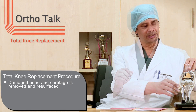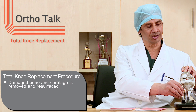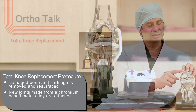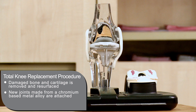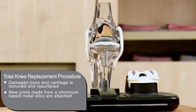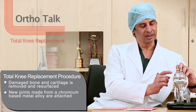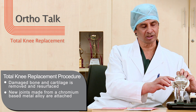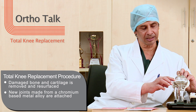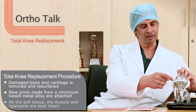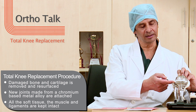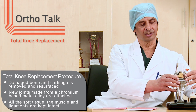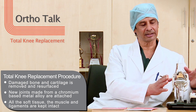Knee replacement involves the introduction of a metal alloy piece — it is a chromium-based metal alloy which is a part of the thigh bone. The white piece that you see is high-density polyethylene, a type of plastic which is fixed onto another metal alloy that goes into the leg bone. All the soft tissues, the ligaments, and the muscles are kept intact.